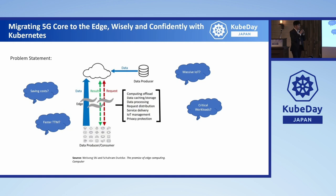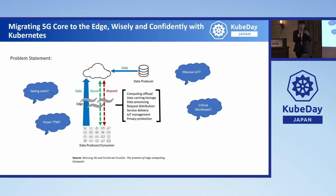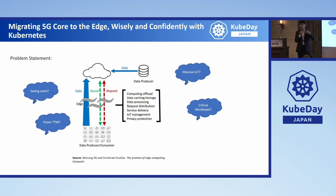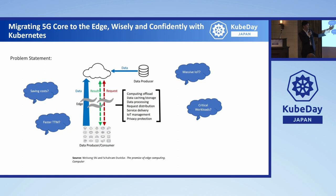For the problem statement, I want to make a simple question: is any of you guys working with 5G or 4G currently with Kubernetes, or have you ever worked with 5G or 4G? For this presentation, we're going to treat 5G as just an application that is going to run at the Edge. I can define Edge as a scenario where we have a data producer trying to send a bunch of data, and in order to get the response, we are trying to put the server close to the data producer. That's the main concept of Edge solutions — computing offloading, data caching, data processing, and so on.